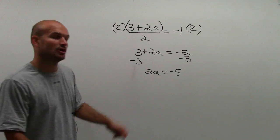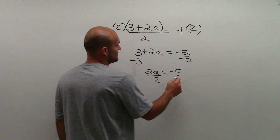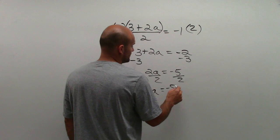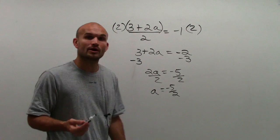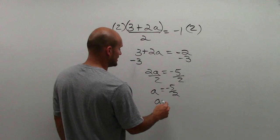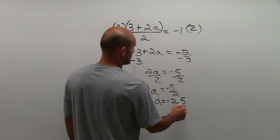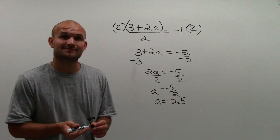Now to undo multiplication of 2, I need to divide by 2. Therefore, I get a equals negative 5 halves. Or if your teacher is asking for it, you can write it in decimal form as negative 2.5.